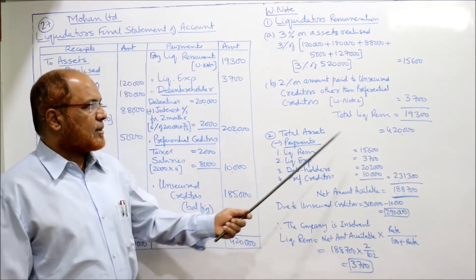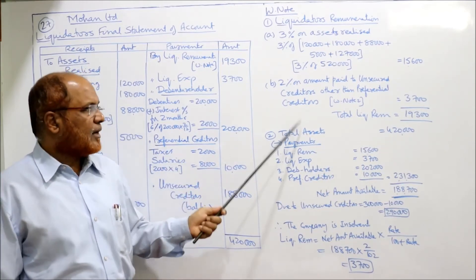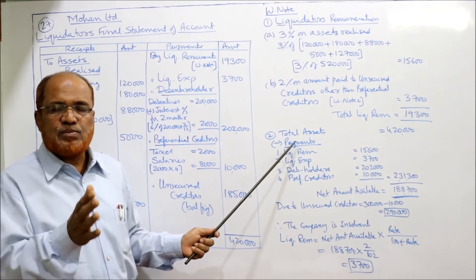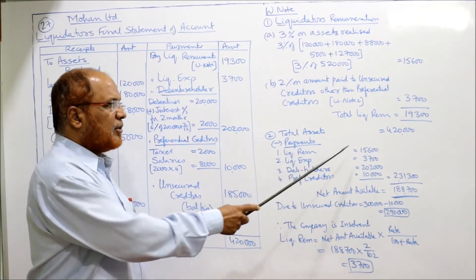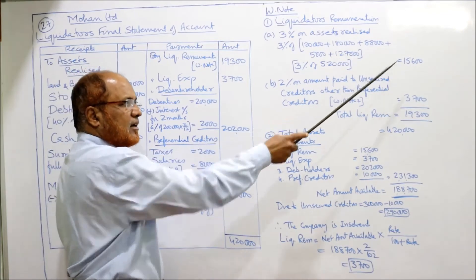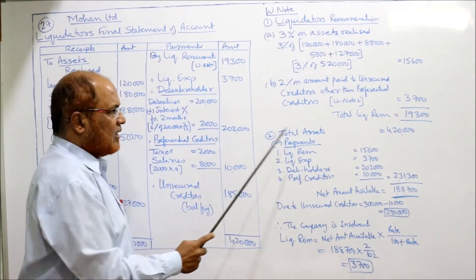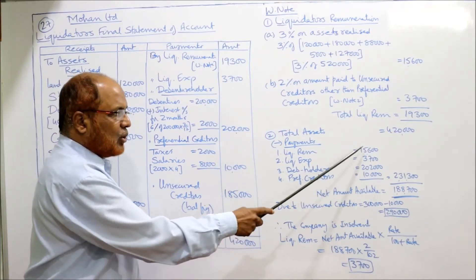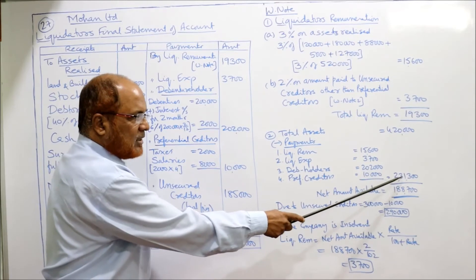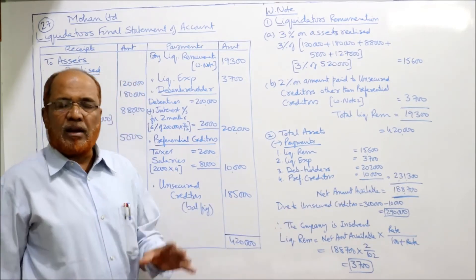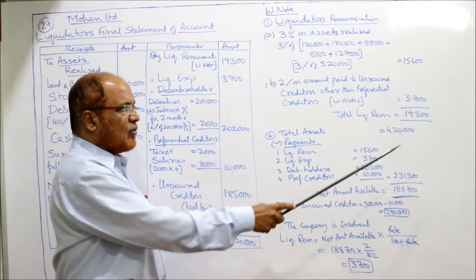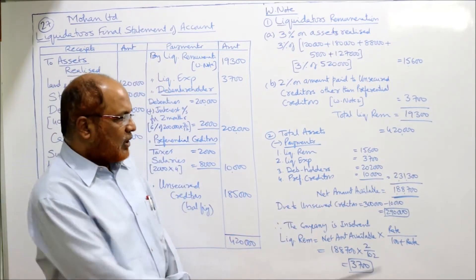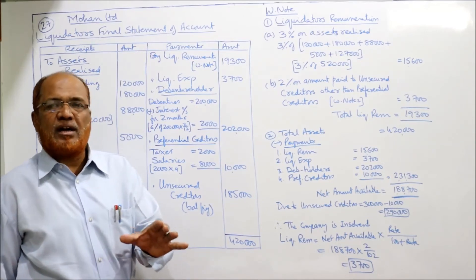Total receipts: Rs.4,20,000. Total payments up to this point (excluding unsecured creditors): liquidator's remuneration Rs.15,600 + liquidation expenses Rs.3,700 + debenture holders Rs.2,02,000 + preferential creditors Rs.10,000 = Rs.2,31,300.